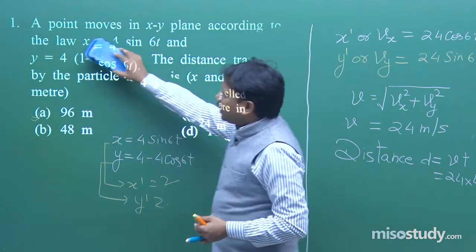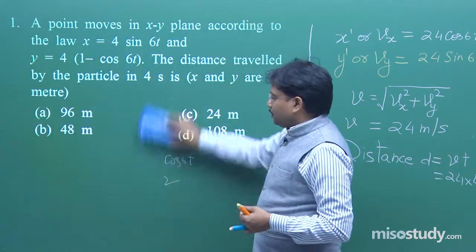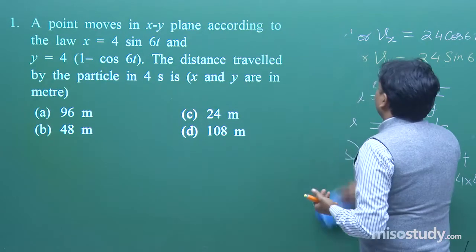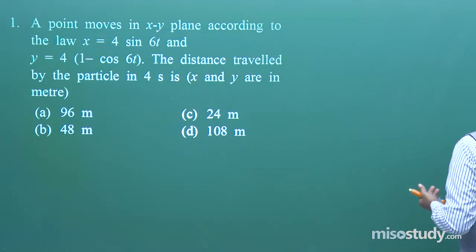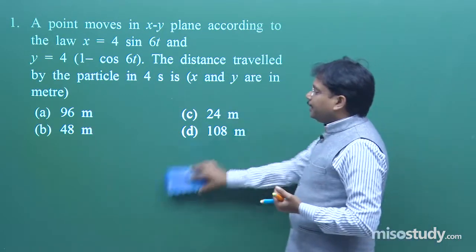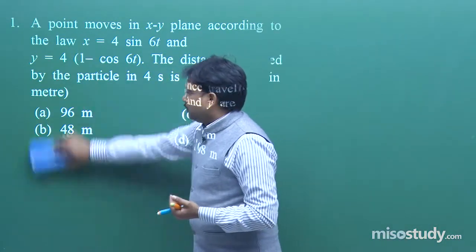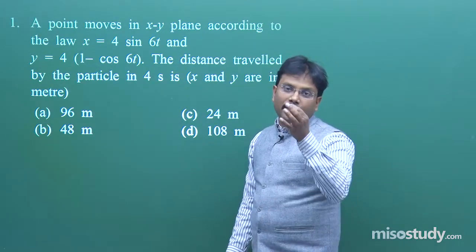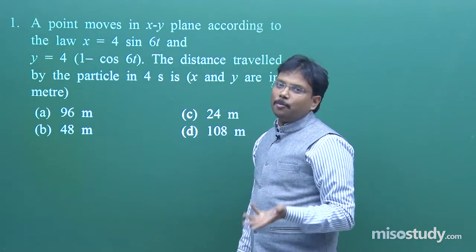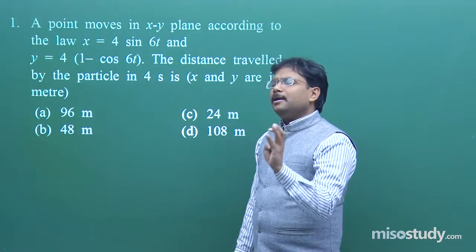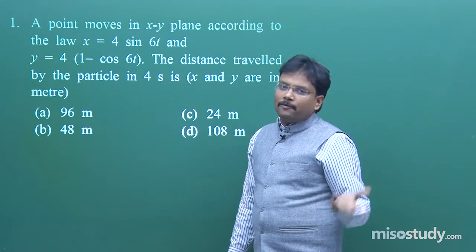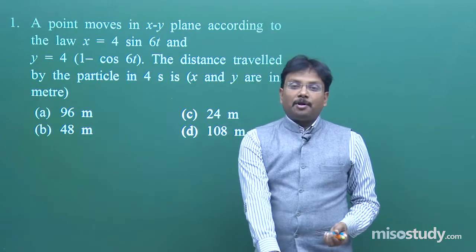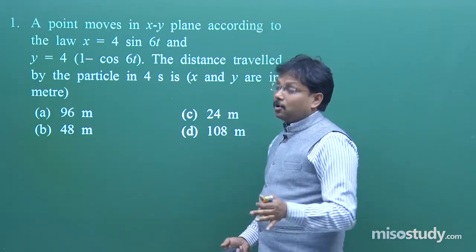I started with a very simple question because you do not know when and how in the actual examination a simple question can come. In 2018 JEE Mains, in one paper there was a question associated with color coding and resistor values — the B.B. ROY formula. Most students left that question because they could not recall those values.